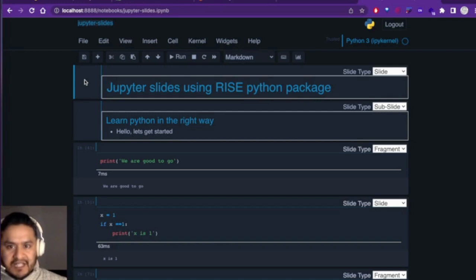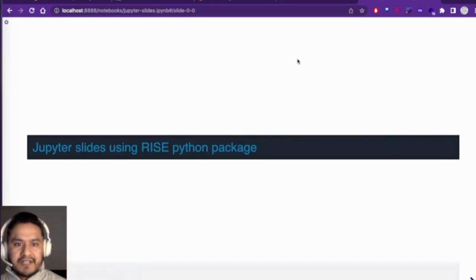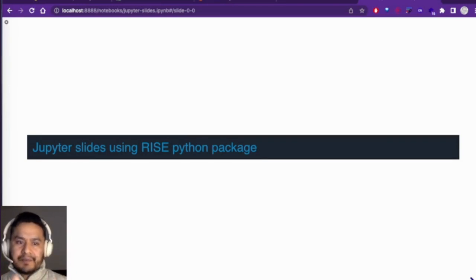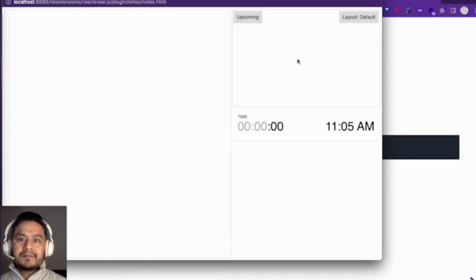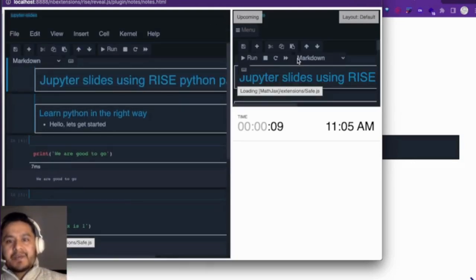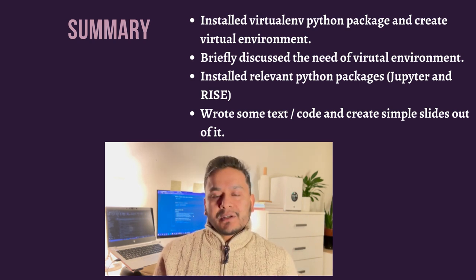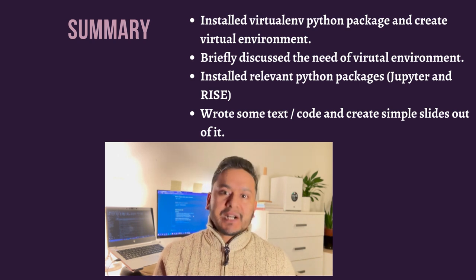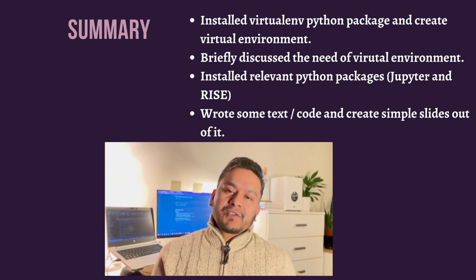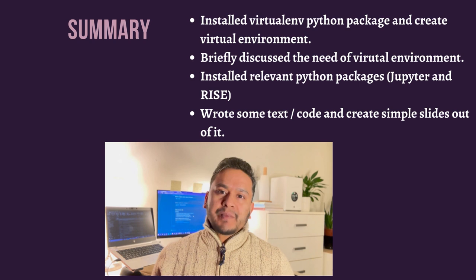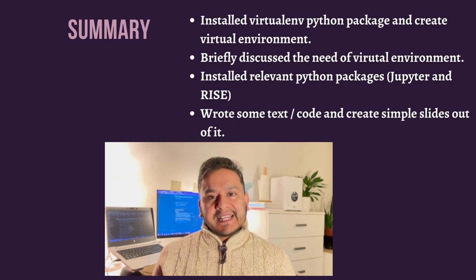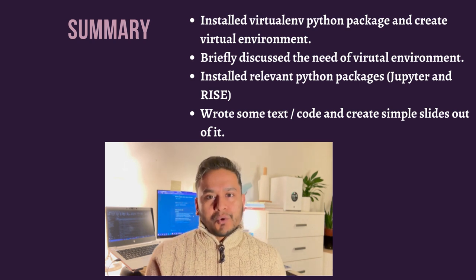You can also add speaker notes to a cell by setting its type to 'Notes' — these won't appear during the presentation. Before finishing, here's one more cool feature: while presenting, press 'T' on the keyboard and a pop-up window appears showing how much time you've spoken, the current slide, upcoming slides, and any notes you've added. In summary: we installed virtualenv and created a virtual environment, installed Jupyter and RISE, then wrote code and text to create live presentation slides.